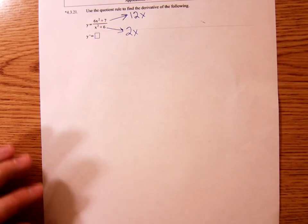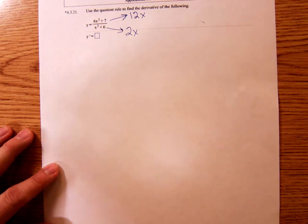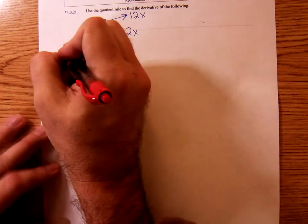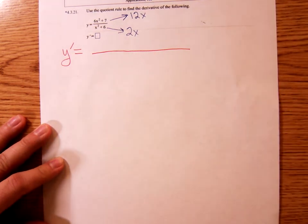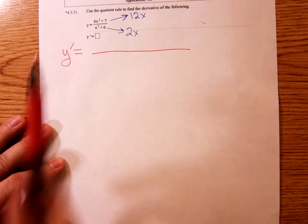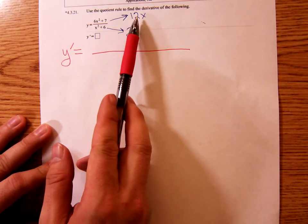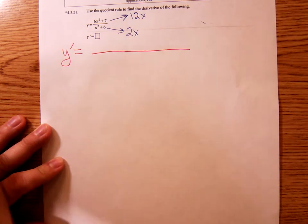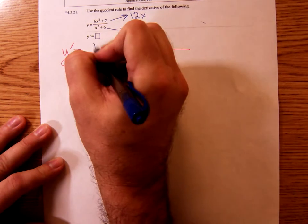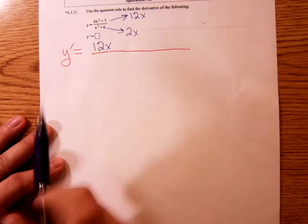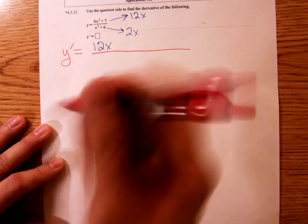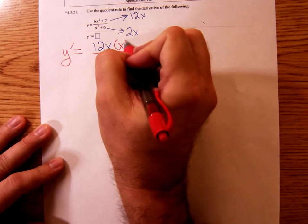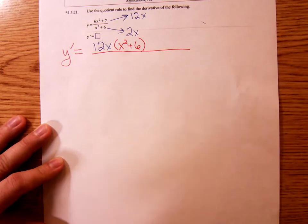Now, using the quotient rule, we get y prime equals - I'm going to draw the big fraction bar. It's the derivative of the numerator. The derivative of the numerator is twelve x times the denominator. The original denominator is x squared plus six.